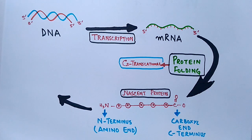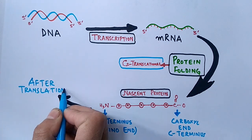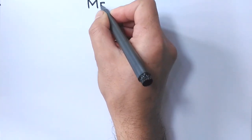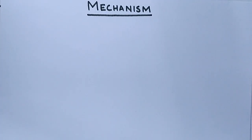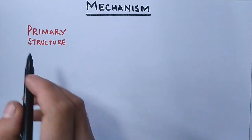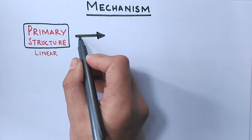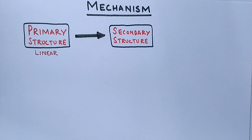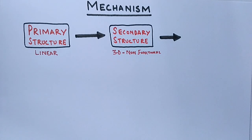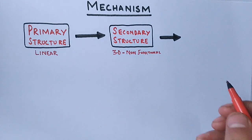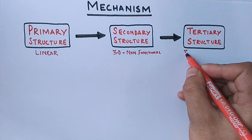Most commonly, folding occurs after translation. The folding process goes through three or four structural stages: the primary structure is the nascent linear protein. Folding of the primary structure gives the secondary structure — alpha helices and beta sheets. The secondary structure is three-dimensional but non-functional. From the secondary structure we get the tertiary structure, which is the functional 3D form of the protein.